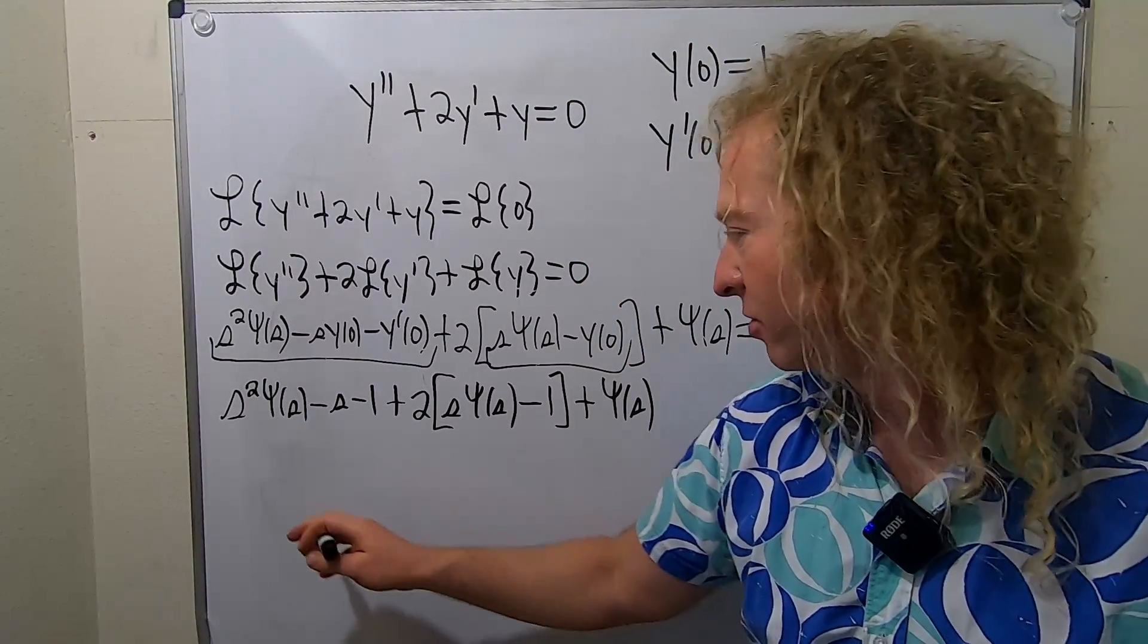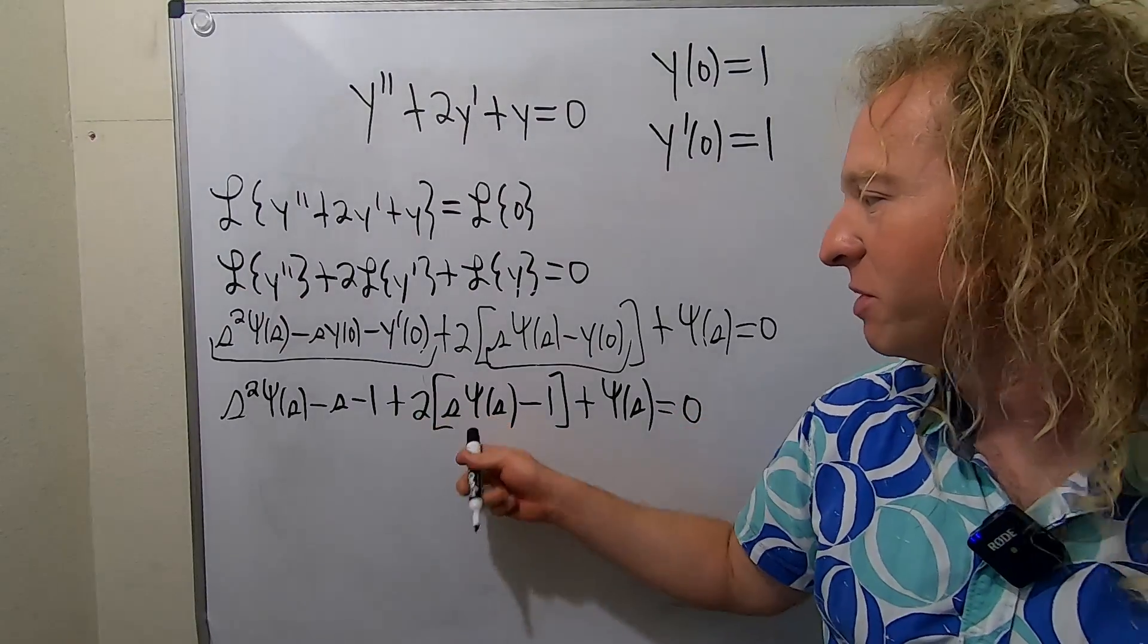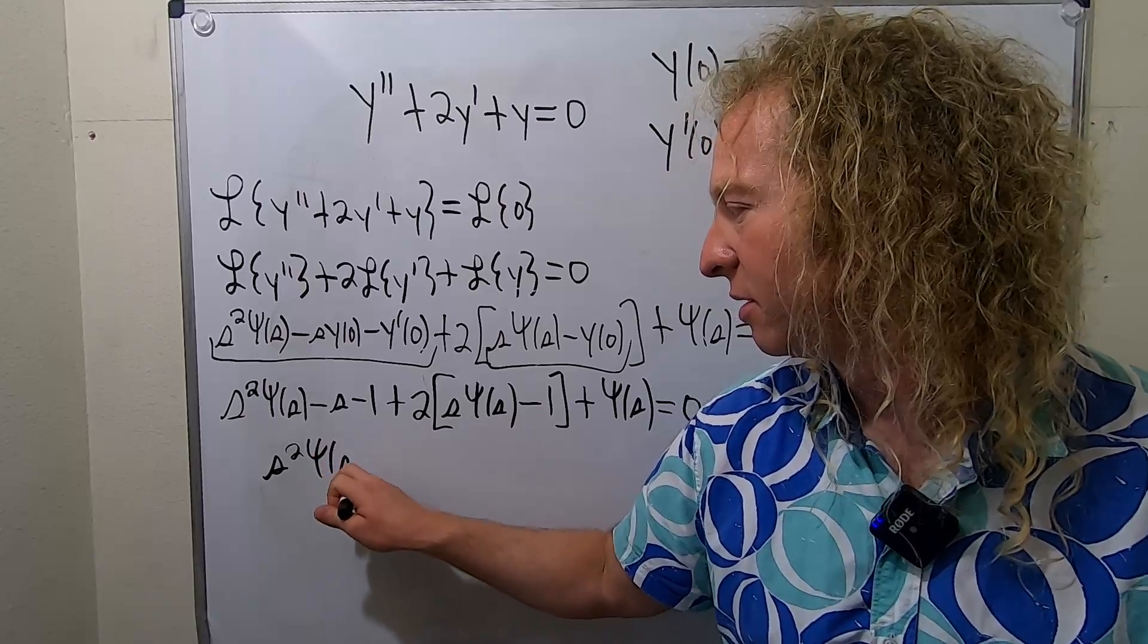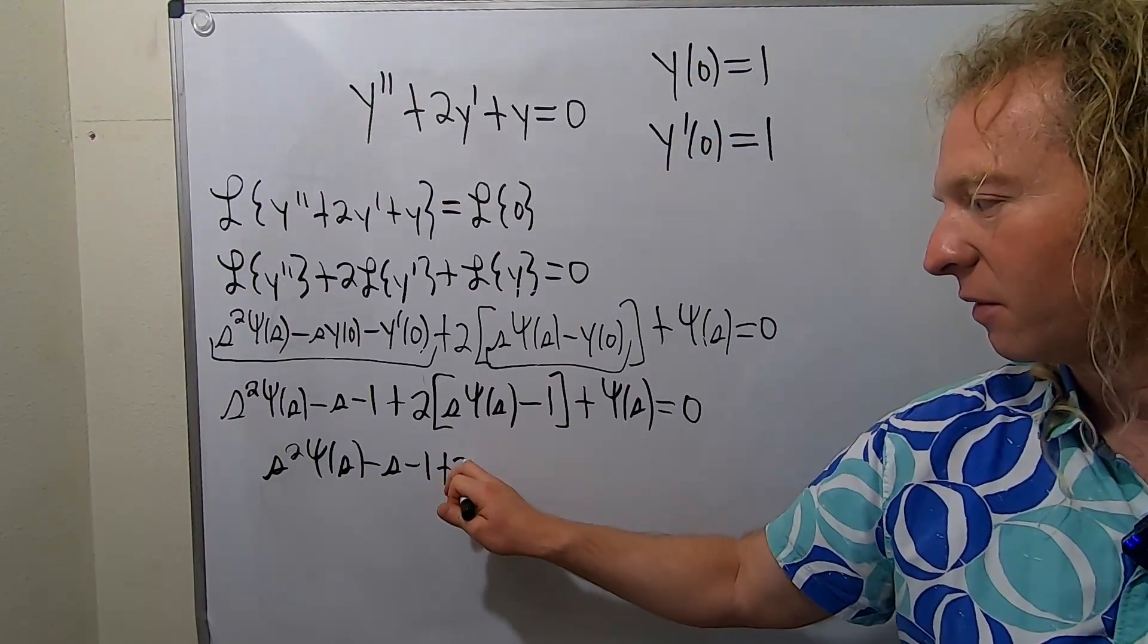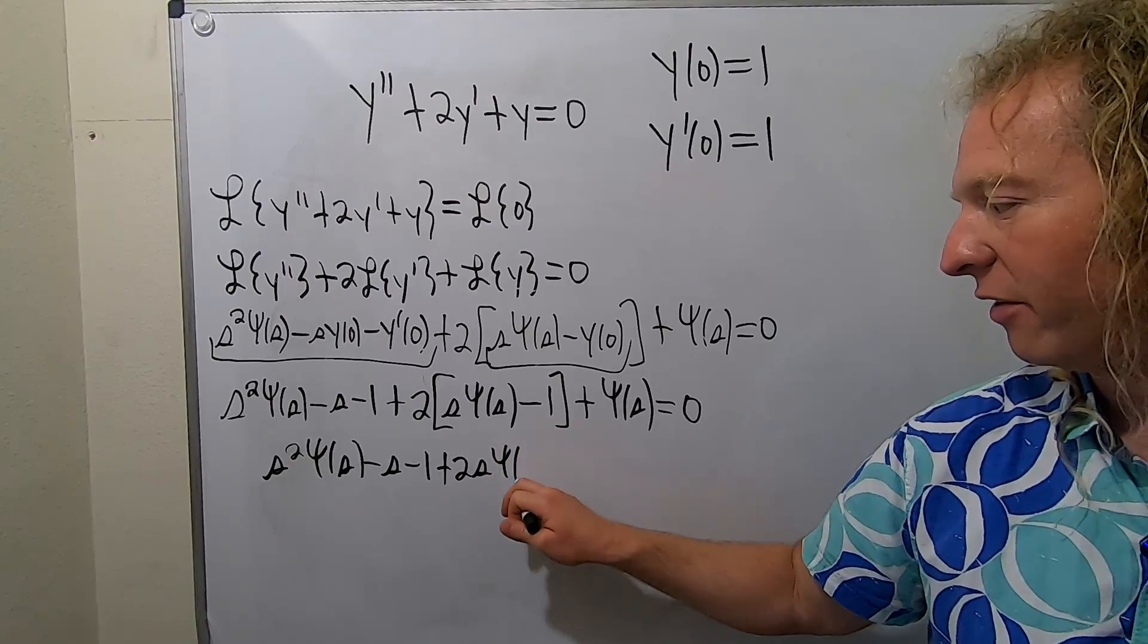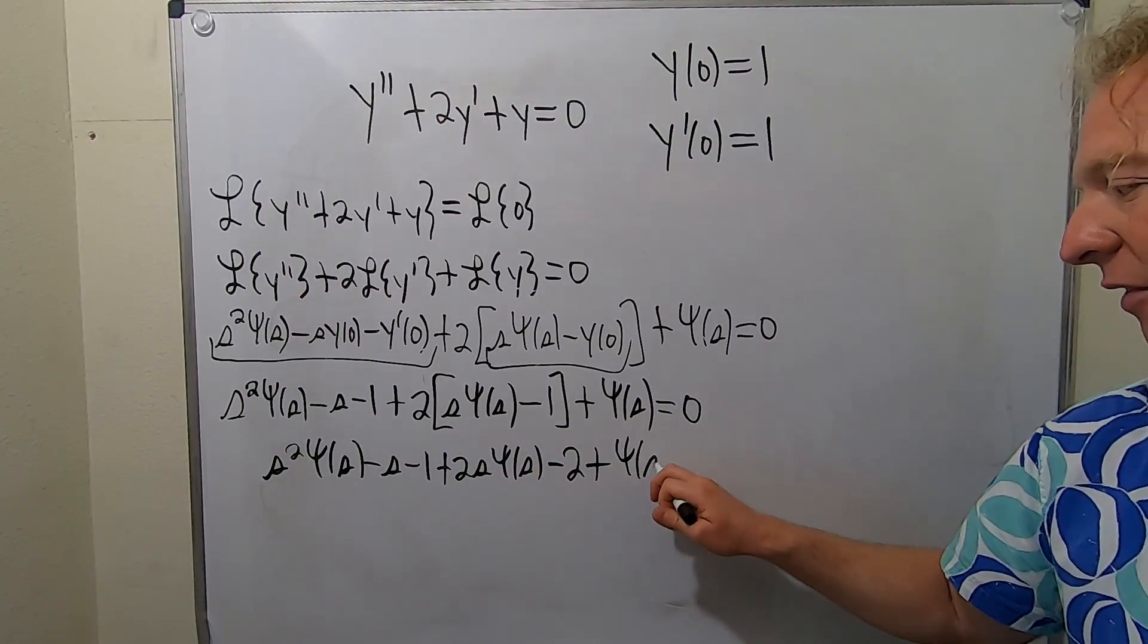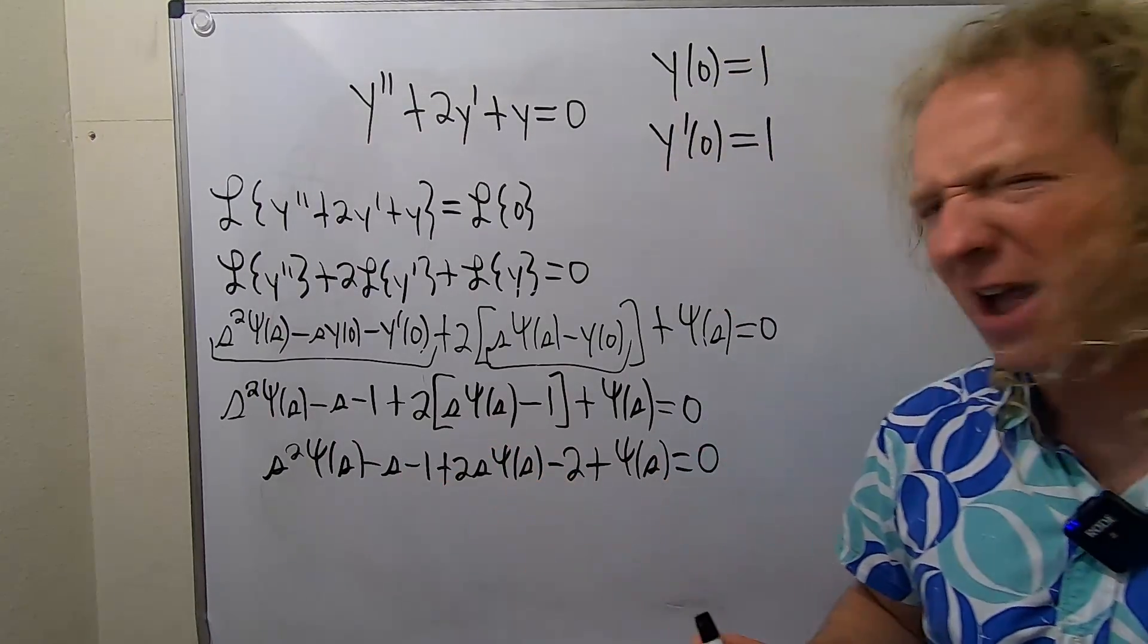So let's do that very carefully. So we have, and over here it's equal to zero. So let's distribute the two. So we have S squared pitchfork Y of S minus S minus one plus two S pitchfork Y of S minus two plus pitchfork Y of S. And this is equal to zero. So just distributed the two.